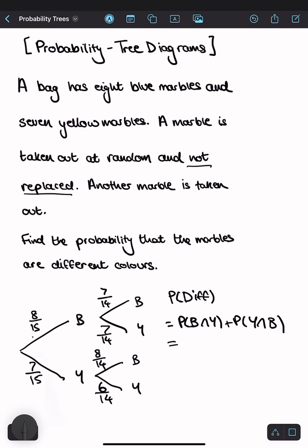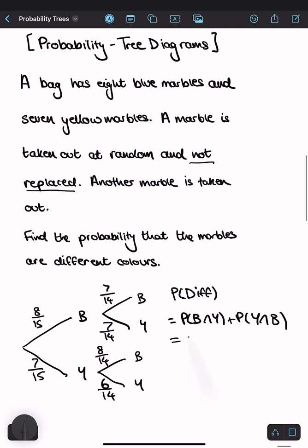So if you're going across the branches, you multiply. So blue and yellow is eight fifteenths times seven fourteenths. And if you're just adding separate branches together, you have to put plus and then seven fifteenths times by eight fourteenths.